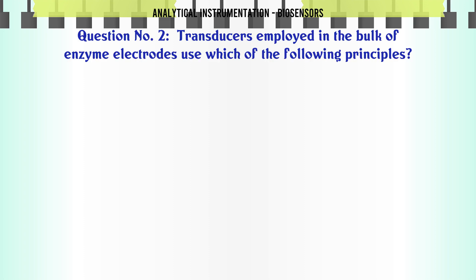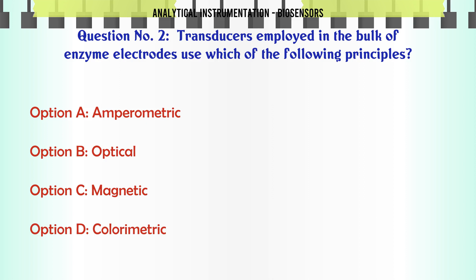Transducers employed in the bulk of enzyme electrodes use which of the following principles? Option A: Amperometric. Option B: Optical. Option C: Magnetic. Option D: Colorimetric.